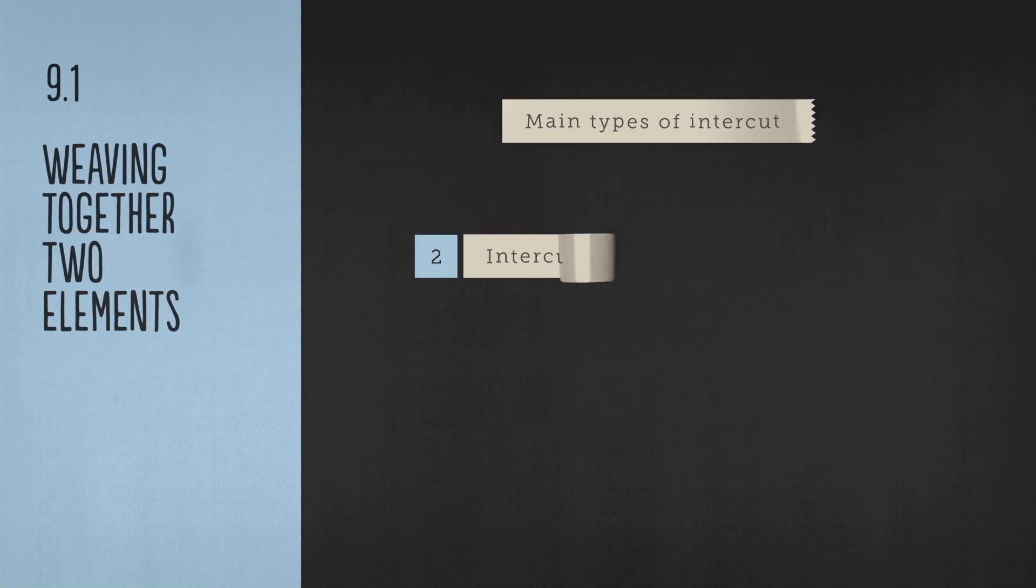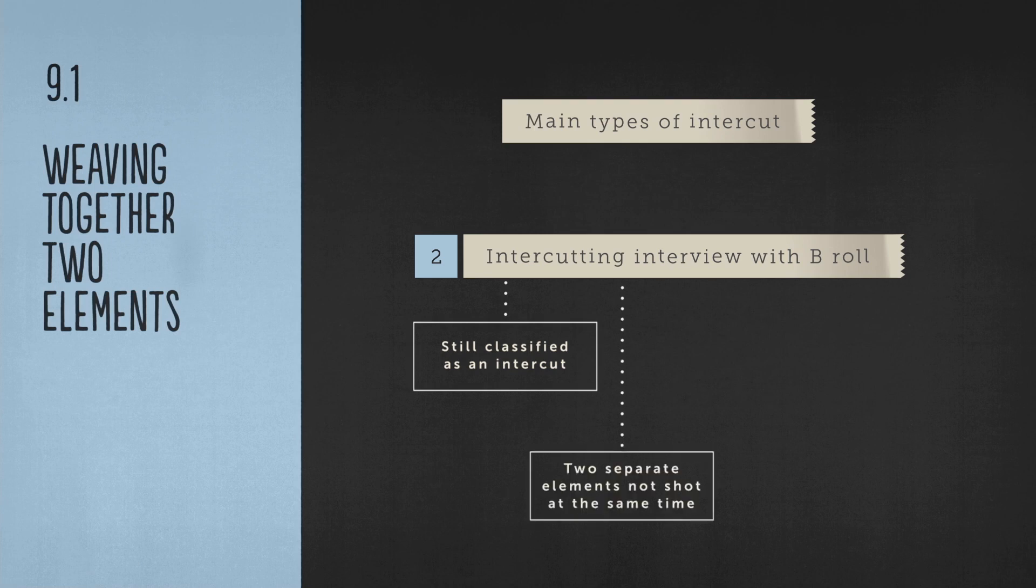Number two. Intercutting interview with B-roll. Now, through learning how to build a basic sync pool and picture painting process, we've kind of looked at this one already, albeit from a different direction. But it's still worth reminding ourselves of its characteristics. Mixing interview with B-roll is still classified as an intercut. We're taking two separate elements that were not shot at the same time and weaving them together to make a coherent sequence. This is a huge part of many scenes in television.